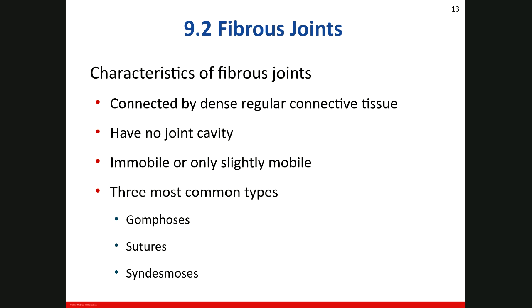The first type of joint I want to talk about is the fibrous joint. Articulating bones in fibrous joints are connected by dense regular connective tissue and we have no joint cavity. This type of joint is immobile or only slightly mobile. We have three types of fibrous joints: gomphosis, suture, and syndesmosis.